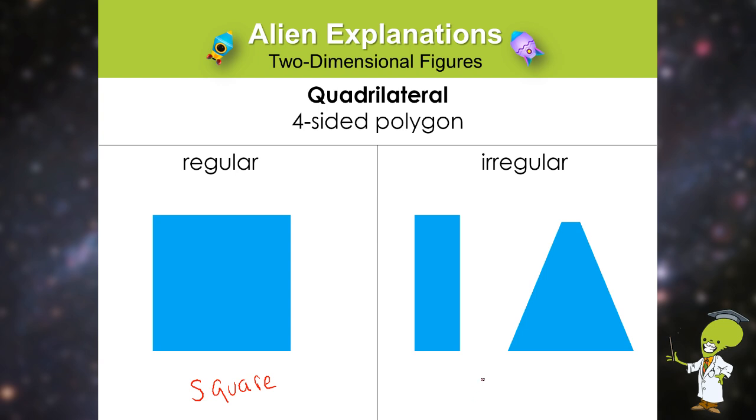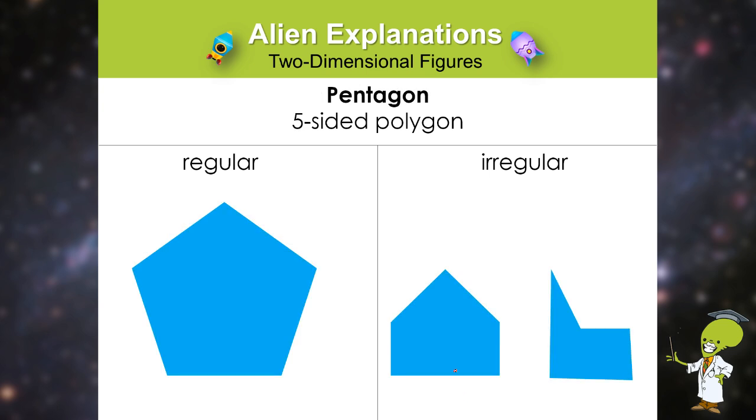Now we go from a four sided polygon to a five sided polygon, which we call the pentagon. So as you can see, the regular pentagon, it appears that all of the side lengths are exactly the same and the angle measurements are all equal as well. Irregular pentagons are simply just five sided shapes.